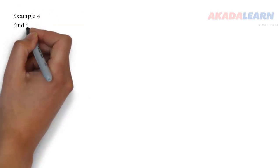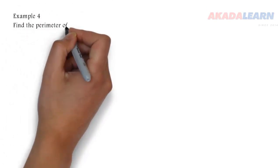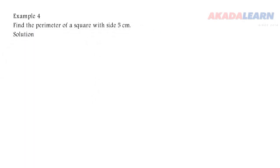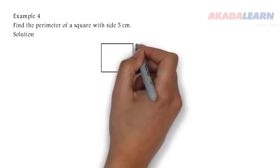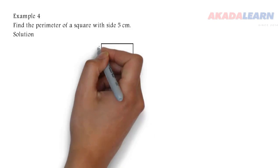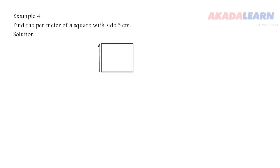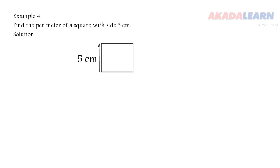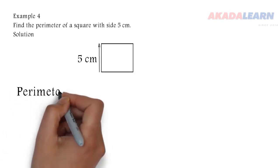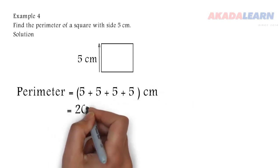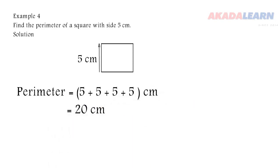Example 4: Find the perimeter of a square with side 5 centimeters. We draw our square and just indicate one of the sides, since we know that all four sides are equal in length. So we just indicate one of the sides to be 5 centimeters. To get our perimeter, we are going to add 5 four times, which gives us 20 centimeters.